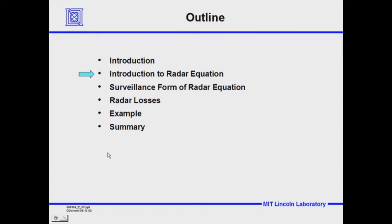First we're going to go over an introduction to the radar equation, then we'll look at the surveillance form of the radar range equation. We'll go over the different losses — what I call the humanity of the radar — the inefficiencies in the different components and subsystems that contribute to losses in the radar equation. We'll look in detail at an example of how radar performance is calculated, and then we'll summarize.